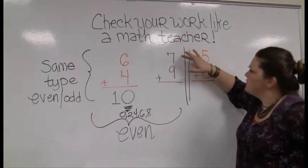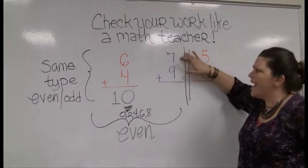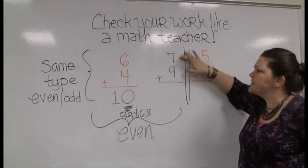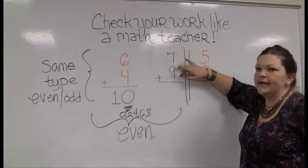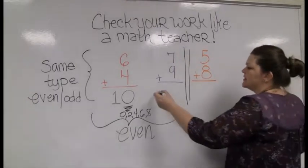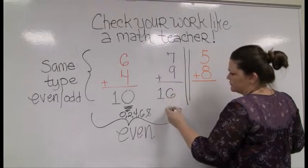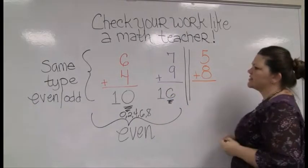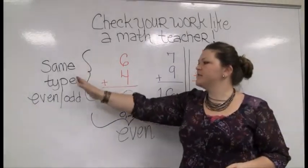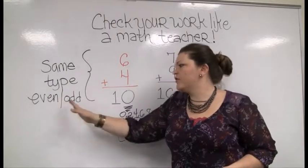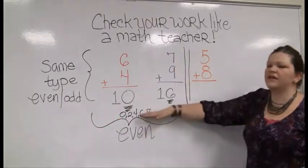Same thing happens when my numbers are both odd. I add two odd numbers, like seven and nine, and I get 16, an even number. Ends in a six. And so, if they're the same type, if they're both even or they're both odd, I'm expecting an even answer, guys.